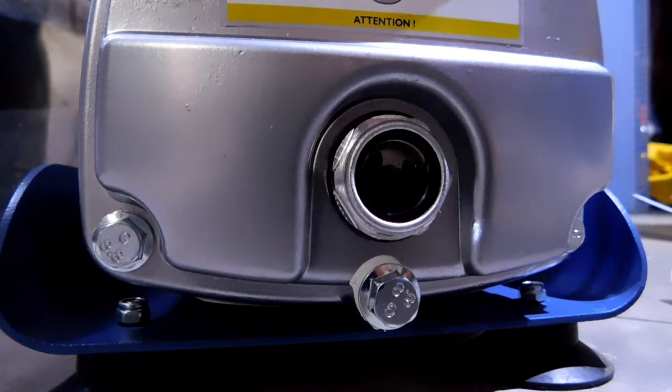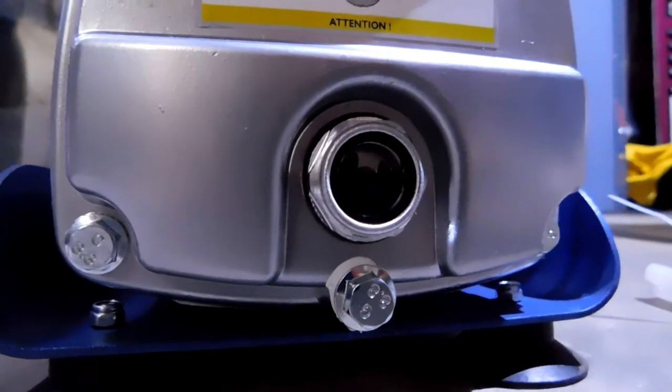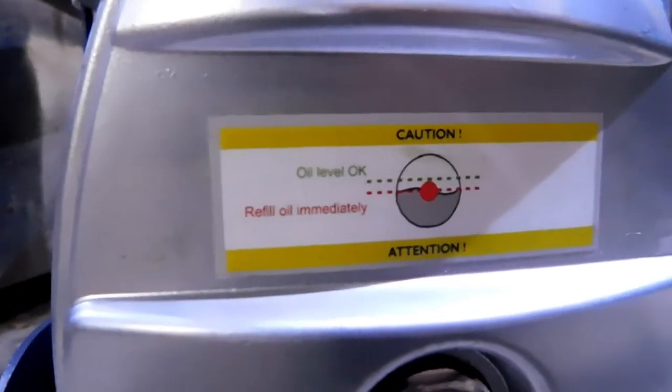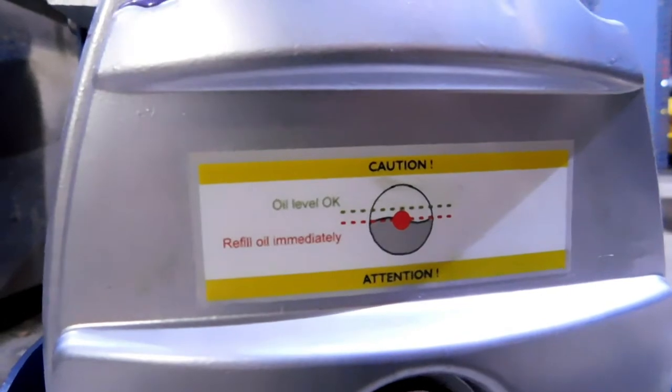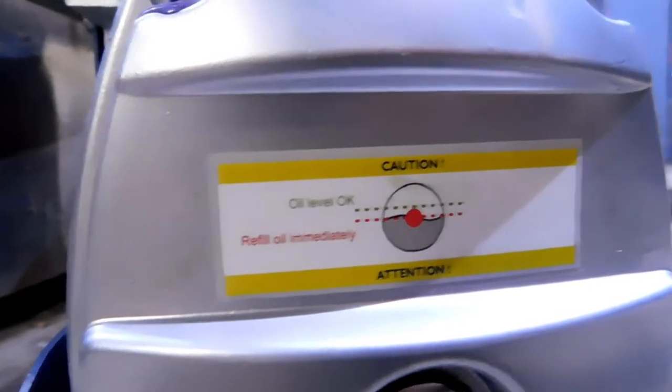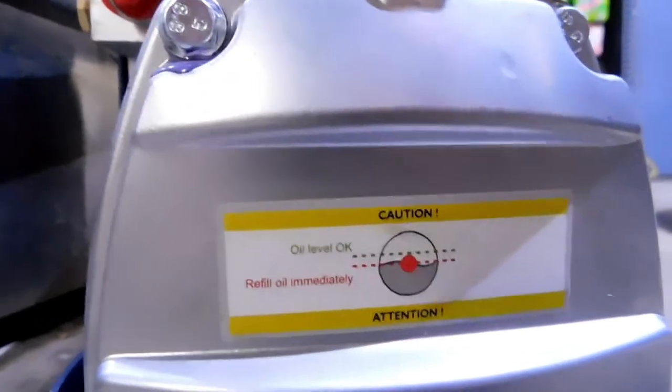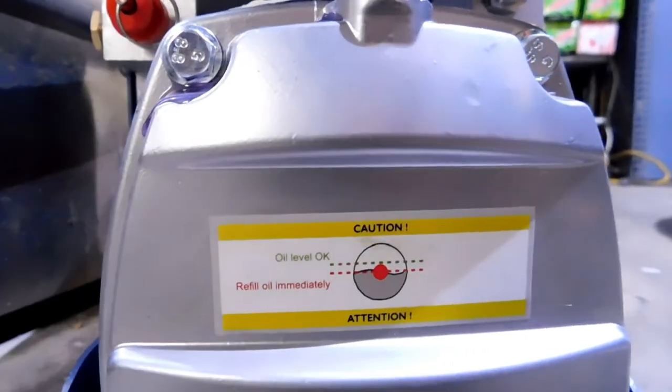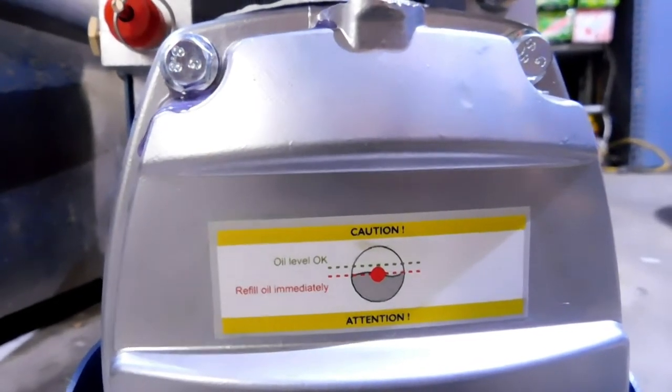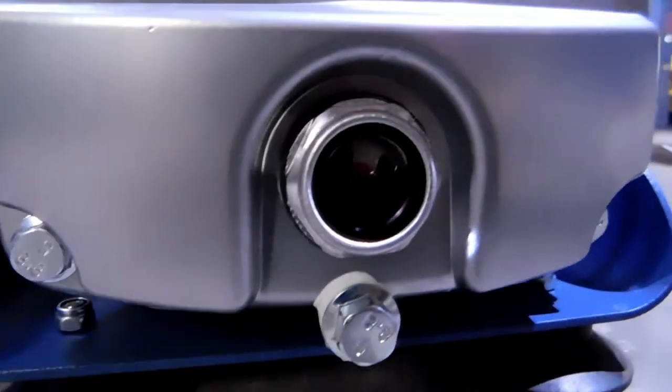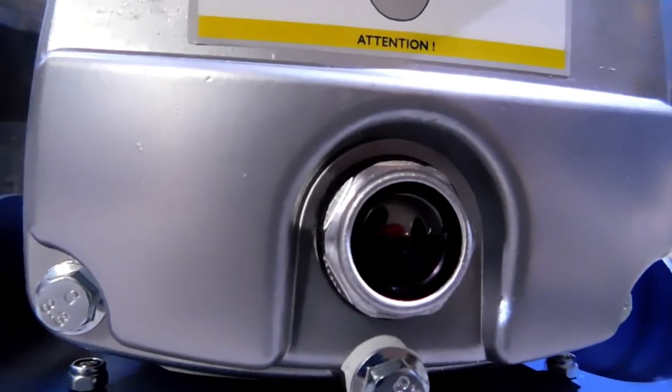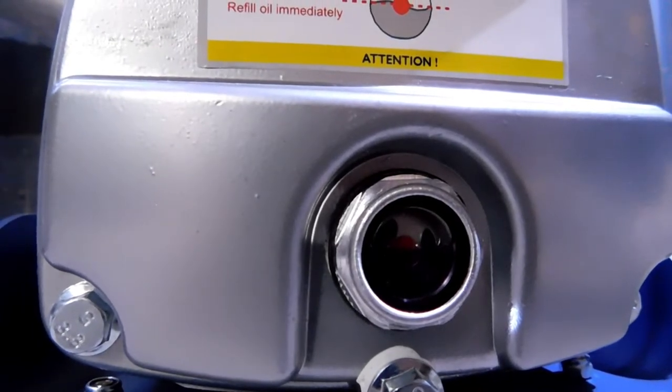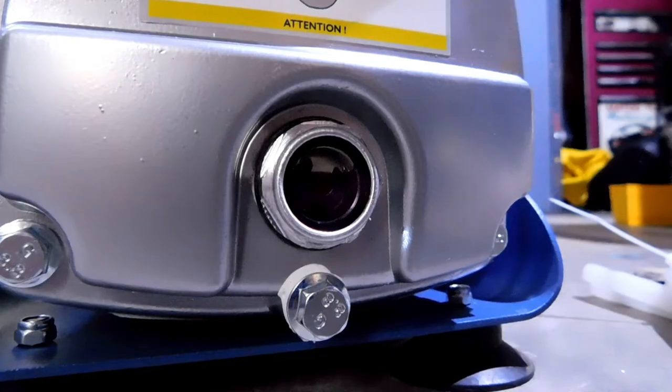Alright guys, as you can see we've kind of brought it directly to the top of that red indicator dot, just exactly as the indicator label here says. It says at the top of that red dot on a level surface is an okay oil level. The center of that red dot would actually be refill oil immediately, so by putting it to the top of that red indicator dot right there, it looks like we could even fill it slightly more. That's where you actually want to be with this unit, you don't want to be in the middle, you want to be at the top of that red dot.